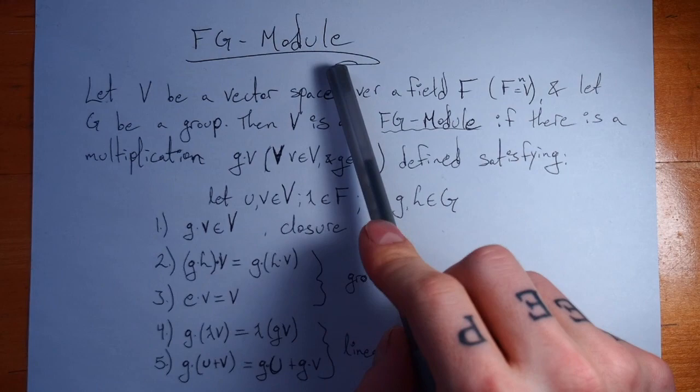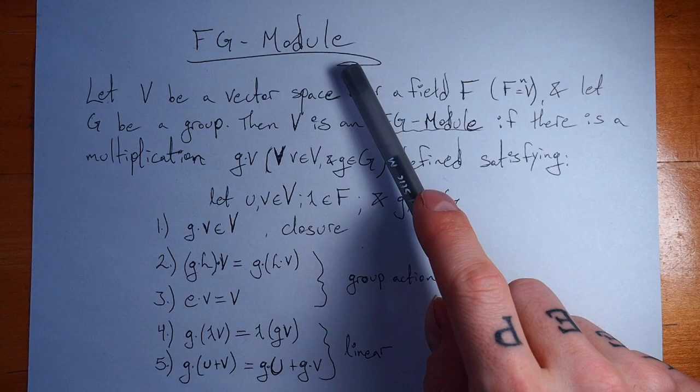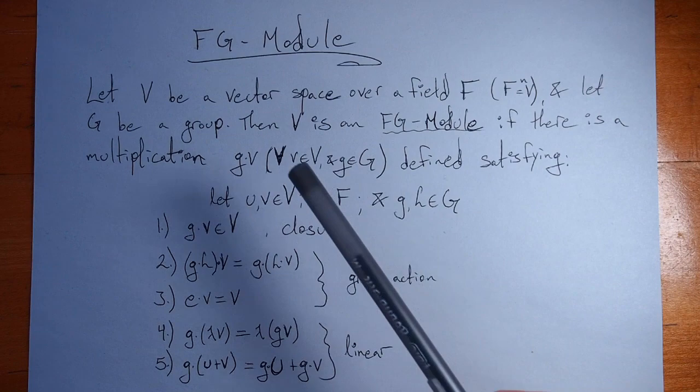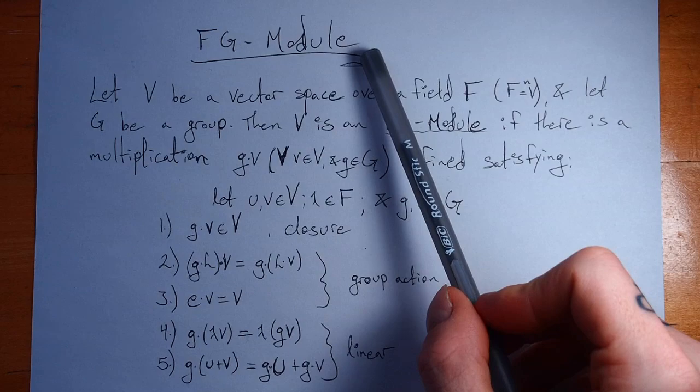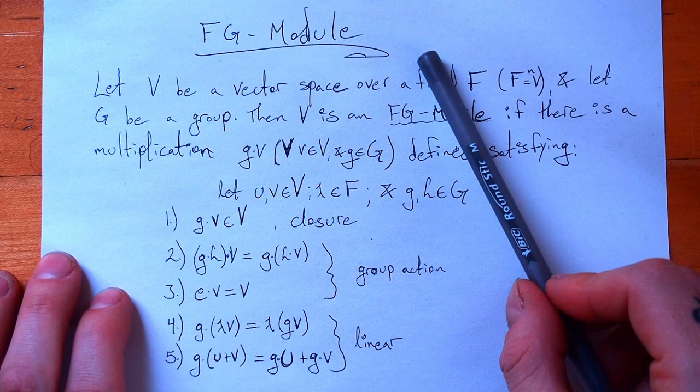I know of modules as a generalization of a vector space, where your scalars are just a ring instead of a field. But I'm not sure how that applies in this circumstance. Once we get into the definition, you'll see that we're working with full-blown vector spaces. So if you know why 'module' is in the name FG module, please let me know in the comments below. Now let's jump into the definition of what an FG module really is.